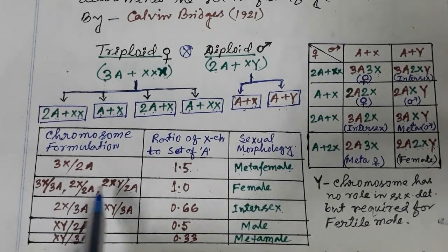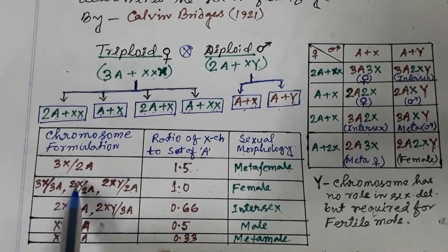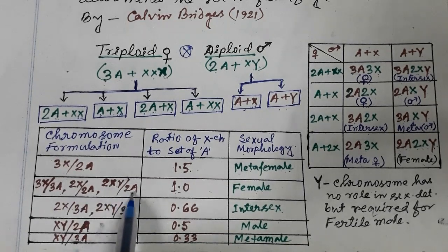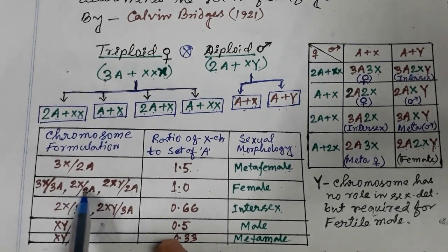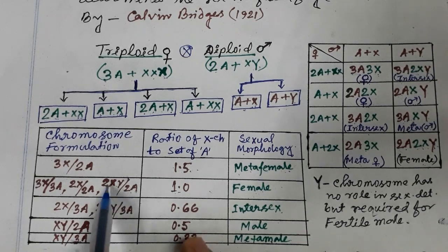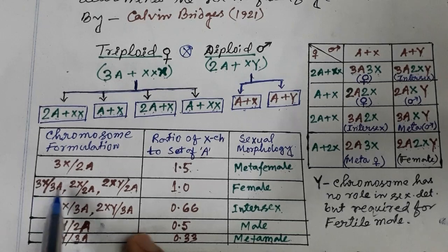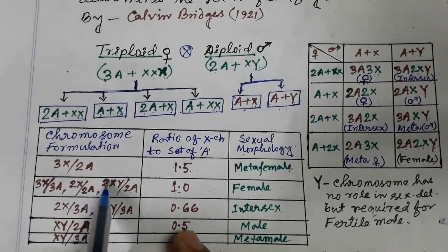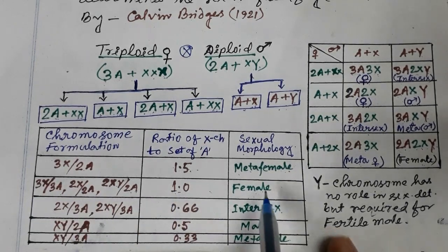The formulae are: 3X by 3A, 2X by 2A, 2XY by 2A — so we have triploid and diploid, with both chromosome sets present. The X to A ratio: 3 by 3 equals 1, and 2 by 2 also equals 1. So we have an X:A ratio of 1, which gives female.